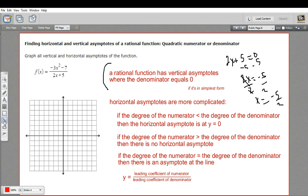And I'll graph that in red. So 5 halves is 2 and a half. So right there. So there's our vertical asymptote.